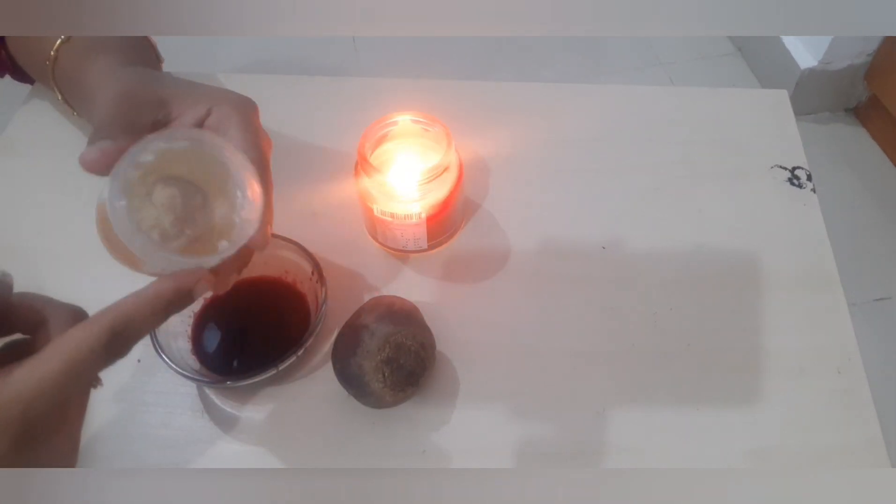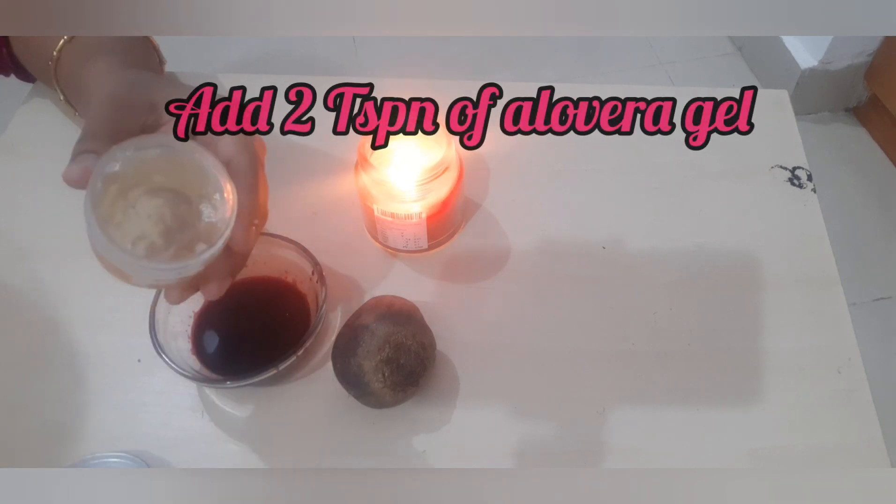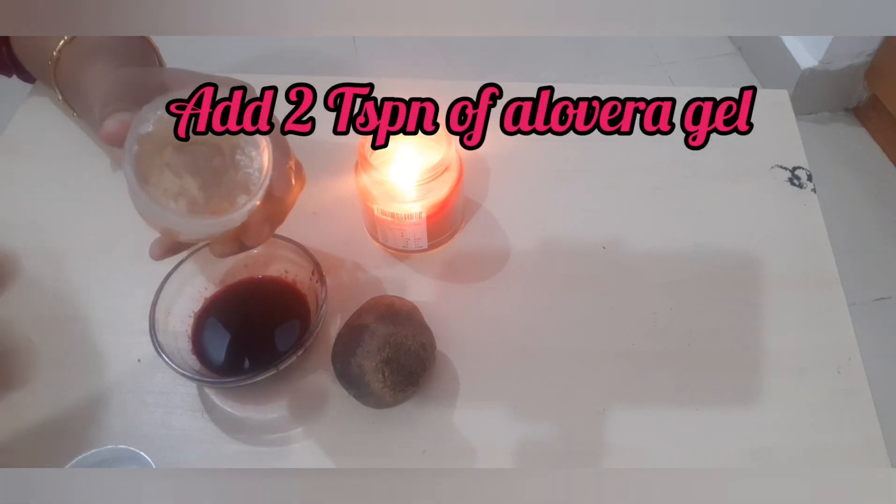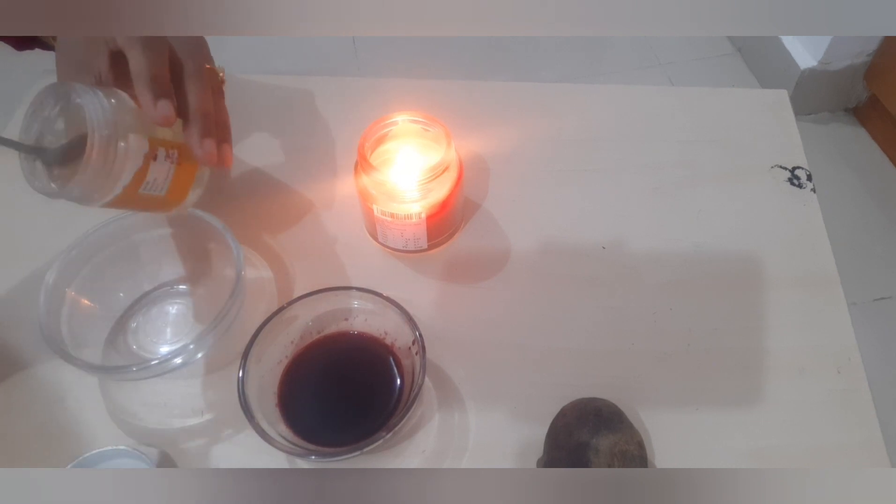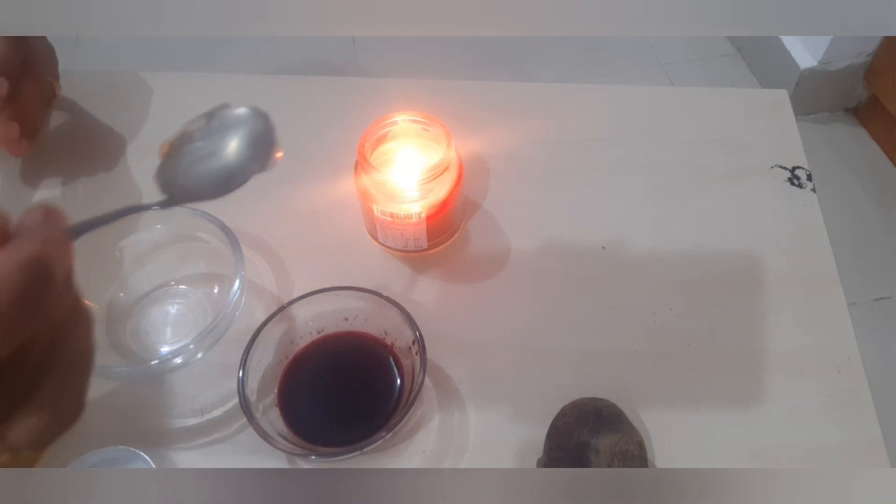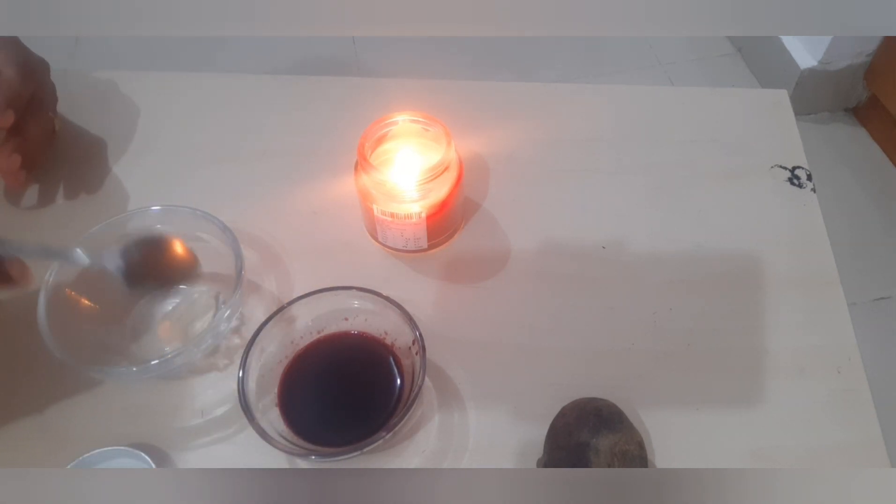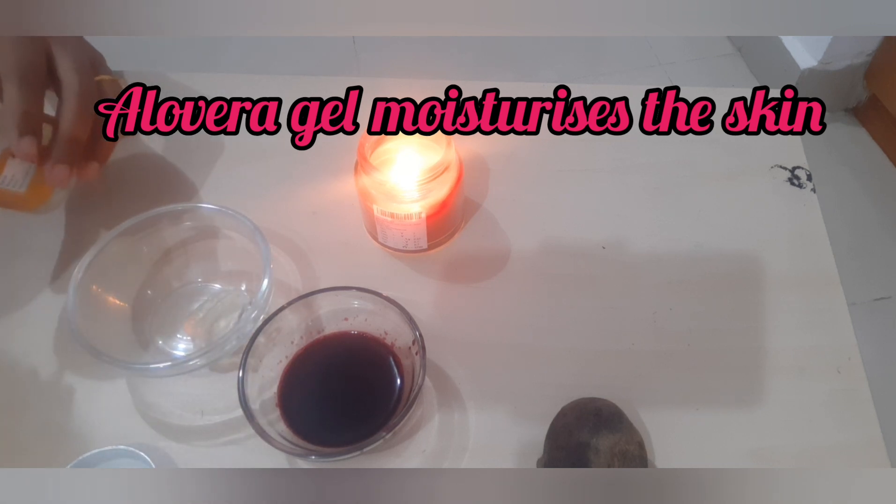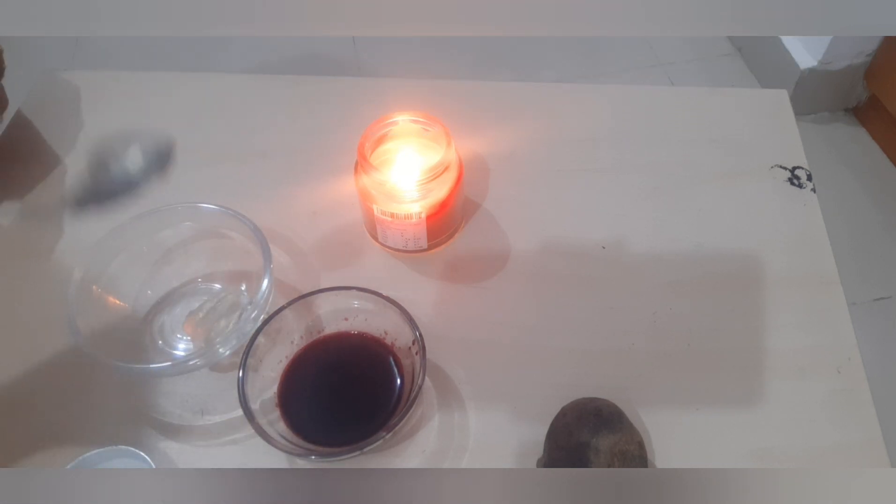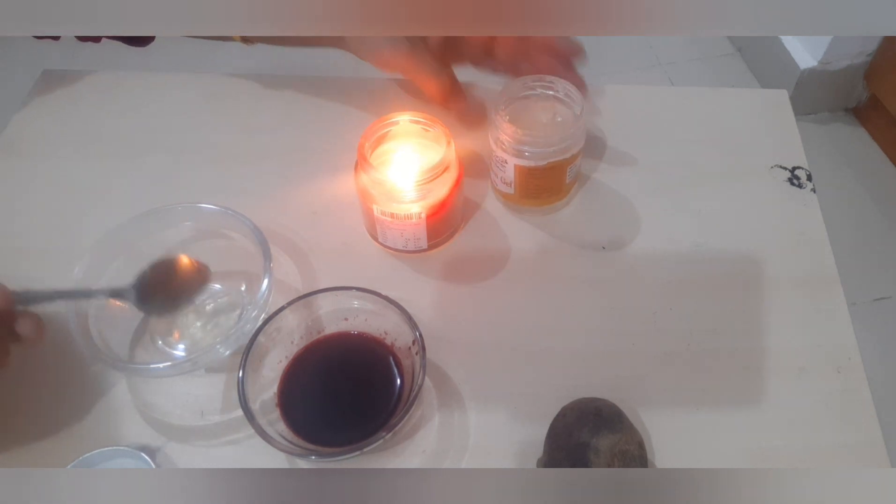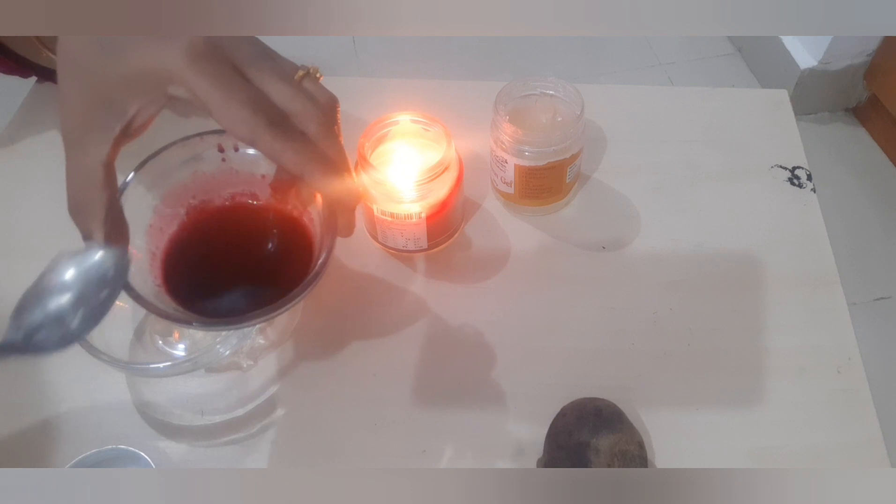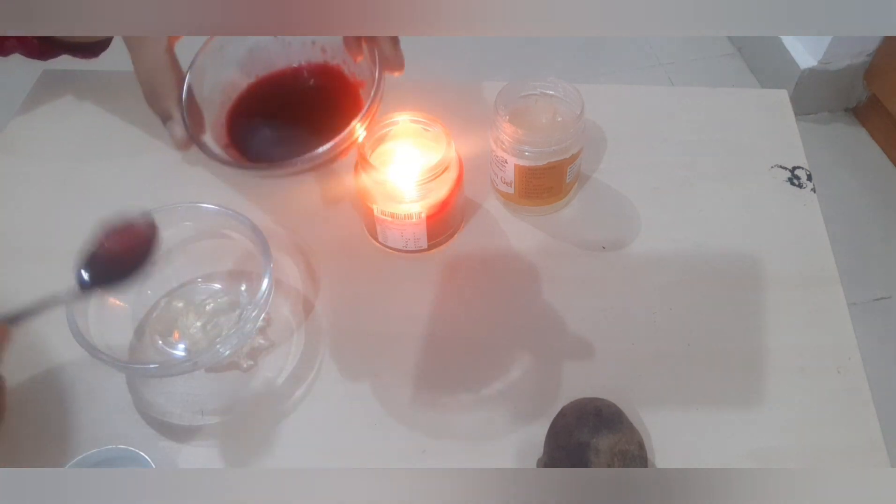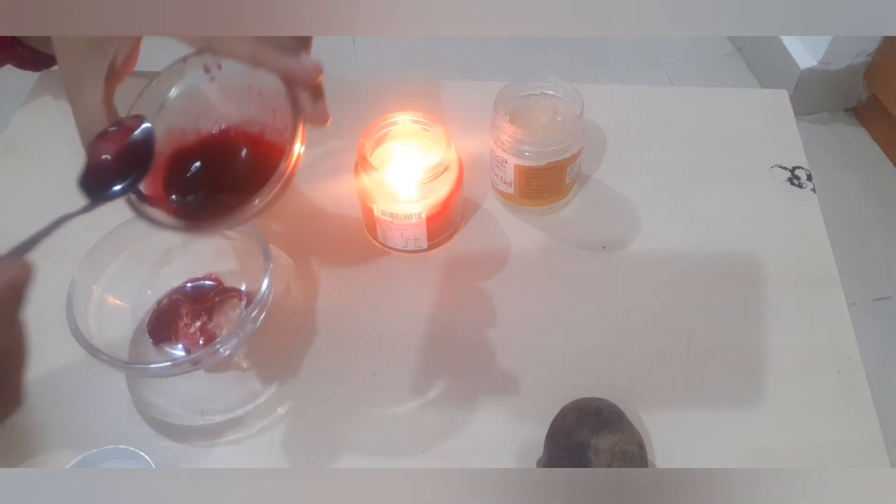First, add 2 tablespoons of aloe vera gel to a bowl. Aloe vera gel will moisturize your skin and help with pimples and acne. If you have fresh aloe vera gel, that's very good, but you should use it within one week. I'm using store-bought aloe vera gel.